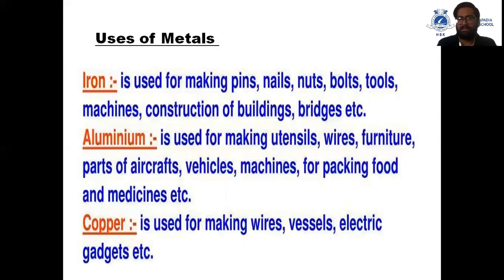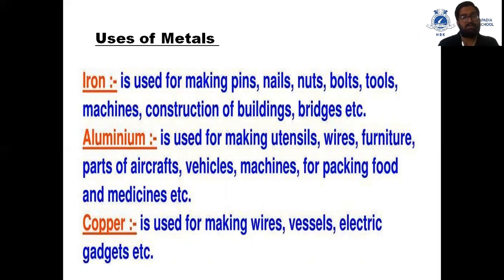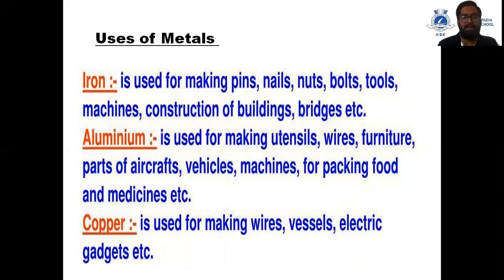Now we will study some uses of metals. Iron is used for making pins, nails, nuts, bolts, tools, and machines, and is also used in construction of buildings and bridges. Aluminium is used for making utensils, wires, furniture, parts of aircraft, and vehicles, and for packing food and medicine. Aluminium is used for aircraft parts because it is light in weight.